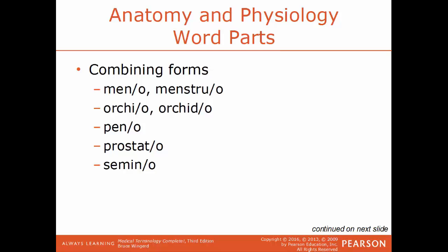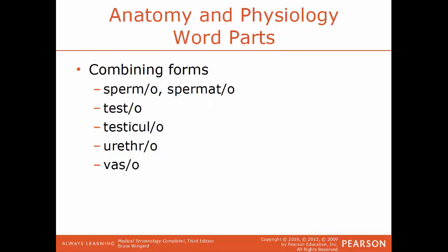Menno or menstruo is a reference to menstruation or menses. Orchio or orcaido is a reference to the testes. Peno is a reference to the penis. Prostato is a reference to the prostate gland, and semino is a reference to semen. Spermo or spermato is a reference to the sperm cells. Testo and testiculo are both a reference to the testicles or the testes. Urethro is a reference to the urethra, and vaso is a reference to a vessel or a duct.